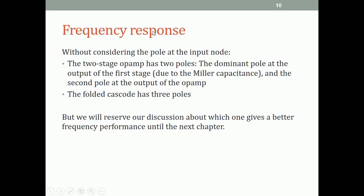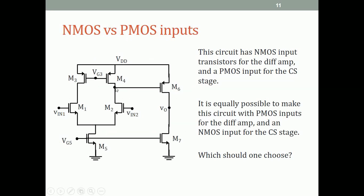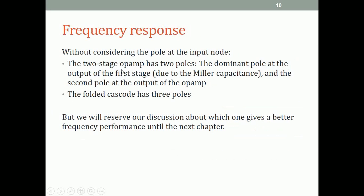Regarding the frequency response of the two-stage amplifier: the dominant pole occurs at the output of the first stage due to the Miller capacitance of the second stage, which makes that pole appear at a much smaller frequency than the pole at the output. The second pole occurs at the output of the op-amp. Ignoring any pole at the input nodes, the two-stage op-amp has two major poles, whereas the folded cascode had three poles.